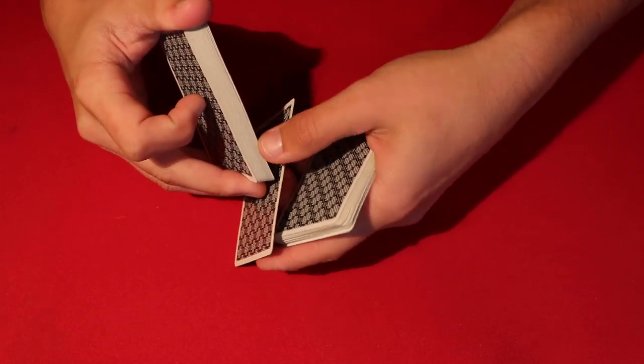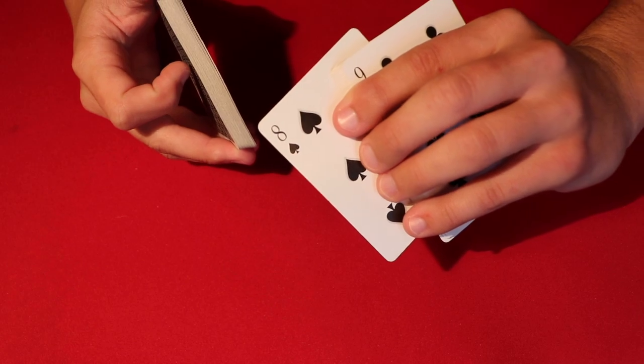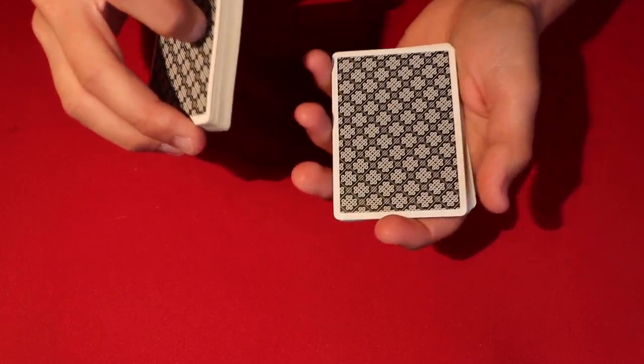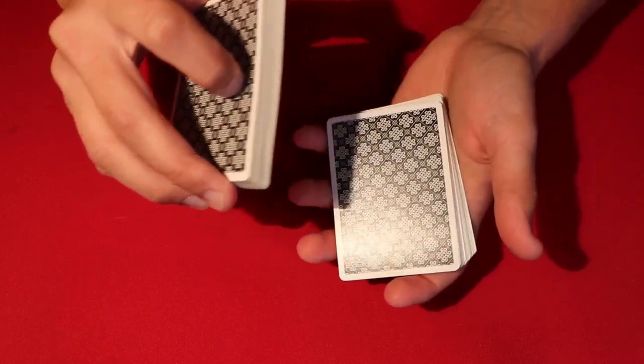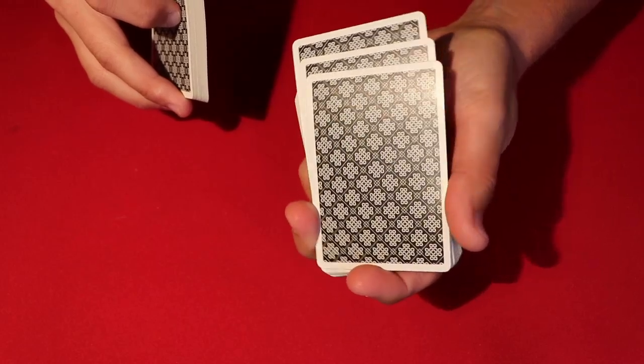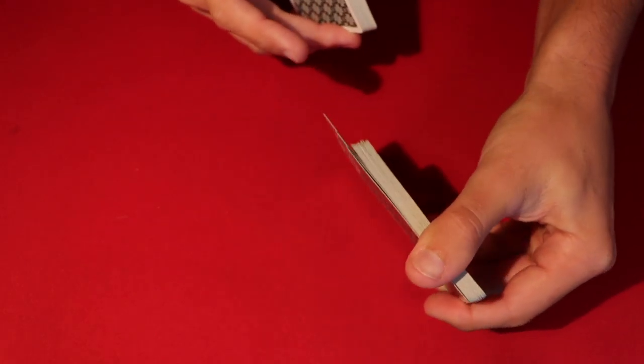You dribble it down, and what you do is take their selected card and leave it right where you stopped. Then you dribble one or two cards maybe off-center like this. As you can see, now these cards are out-jogged towards the back just like that.